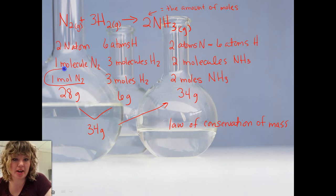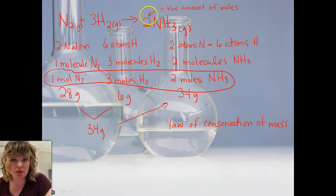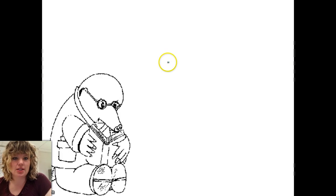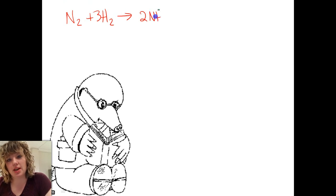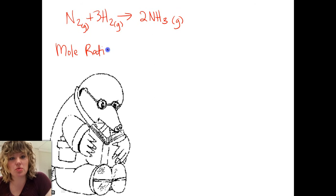So piggybacking off of this right here, this is really important in this chapter. The idea of these coefficients equaling the amount of moles of that given substance. So, let's talk about what this does for us. So, if we have N2 plus 3H2, and we make 2NH3 molecules, now we can make these what is called a mole ratio. And what a mole ratio is, it's a conversion factor that is made from a balanced chemical equation.